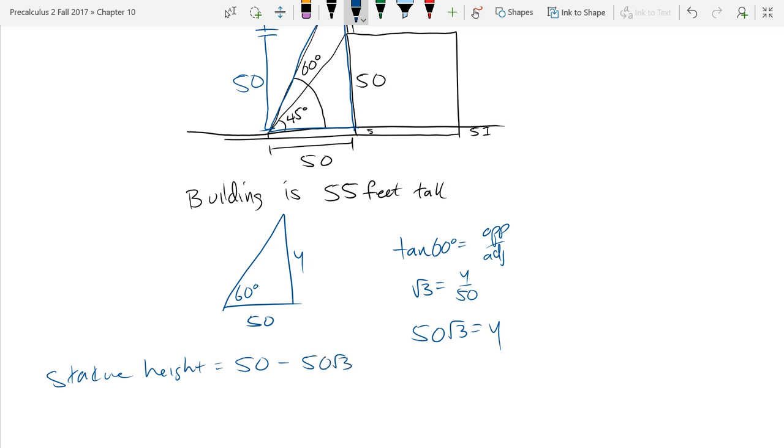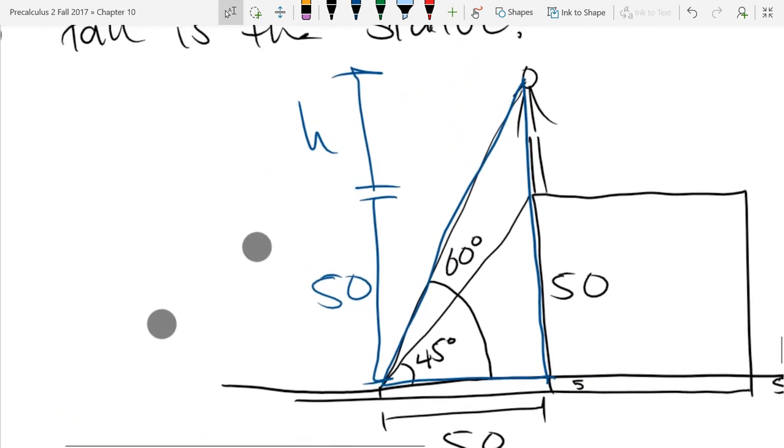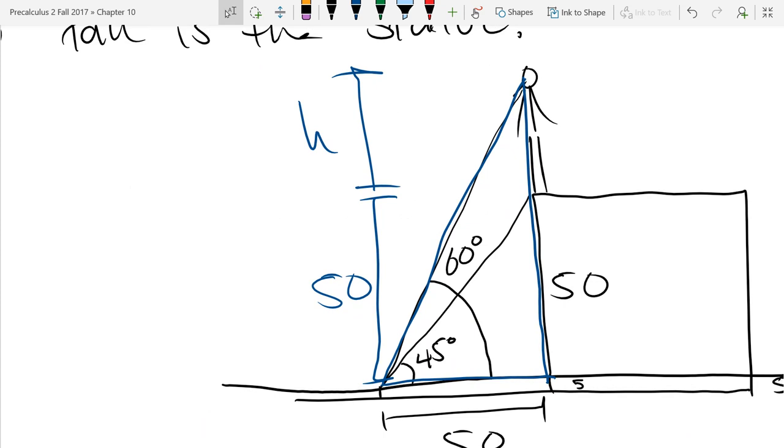I kind of excluded that from the second calculation because I took the building height of 50, not 55. On the second one, I knew I didn't really care about the actual height to the ground.